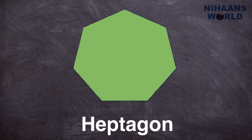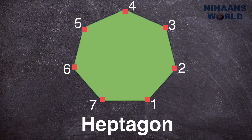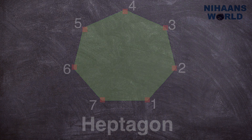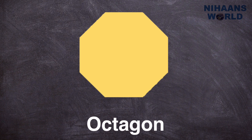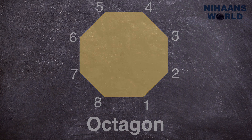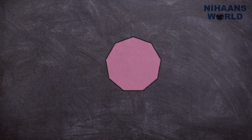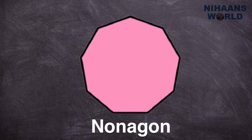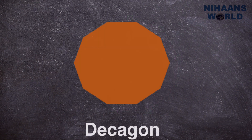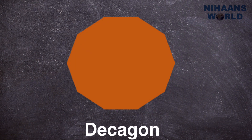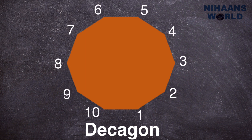Heptagon. A heptagon has 7 sides. Octagon. An octagon has 8 sides. Nonagon. A nonagon has 9 sides. Decagon. A decagon has 10 sides.